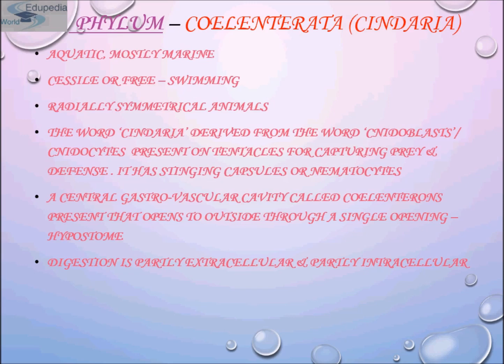Cnidarians exhibit two body forms: one is polyp and the other is medusa. The polyp is sessile and cylindrical in form, like Hydra — for example, Adamsia. Whereas medusa is umbrella-shaped and freely swimming, like Aurelia or jellyfish. Those cnidarians which exist in both forms exhibit alternation of generation, that is metagenesis — the polyp produces medusa asexually, and medusa forms polyps sexually. For example, Obelia.